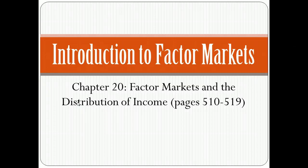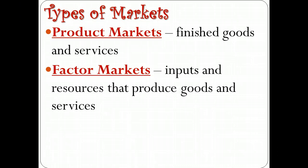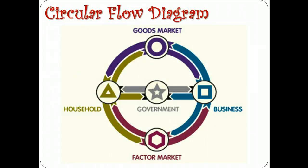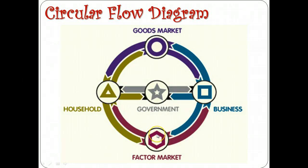We start with the idea of different types of markets. We've looked at product markets — those are for finished goods and services, and that's pretty much everything we've looked at so far in microeconomics. There are other markets known as factor markets, which are the markets for the inputs that go into producing those goods and services. In the circular flow diagram, households and businesses participate in both the factor and goods markets. Households purchase goods from the goods market, and businesses purchase factors of production — like land, labor, and capital — from the factor market.